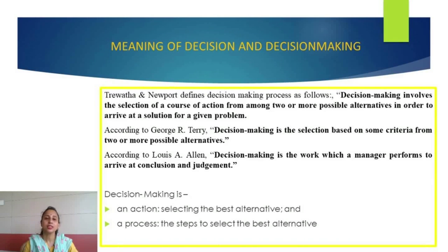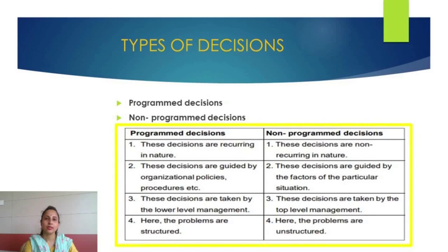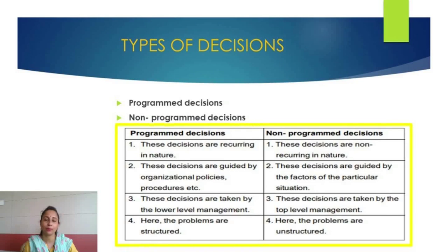Thus, decision making is: first, an action of selecting the best alternative; and second, a process that has steps to select the best alternative. Now let us discuss some types of decisions. In this video we will discuss two types: programmed decisions and non-programmed decisions.